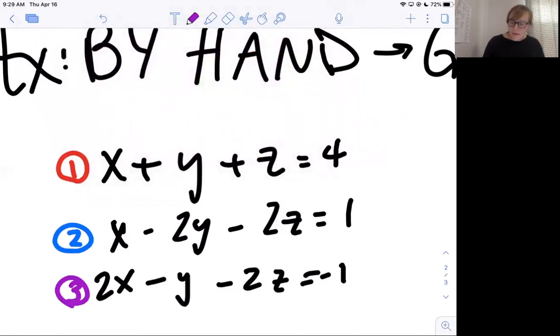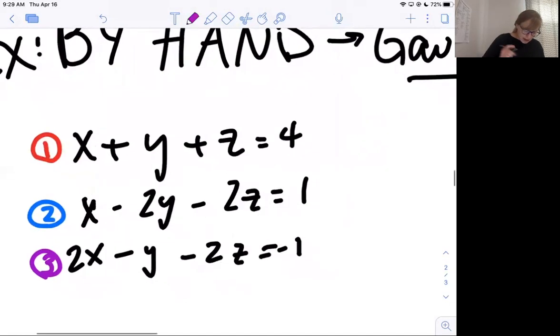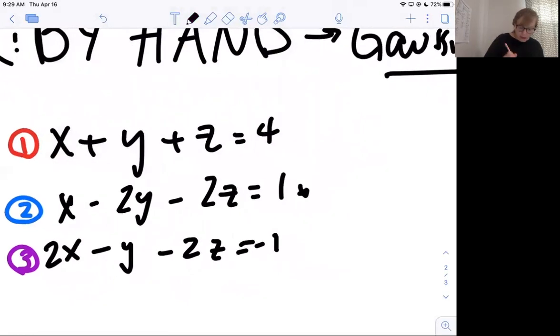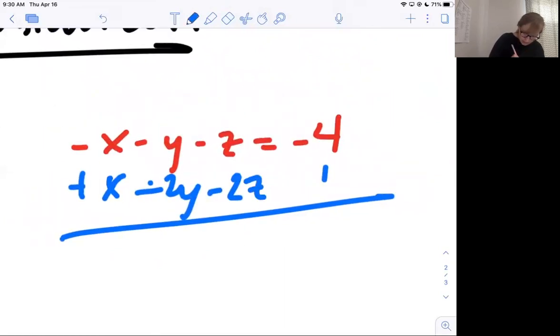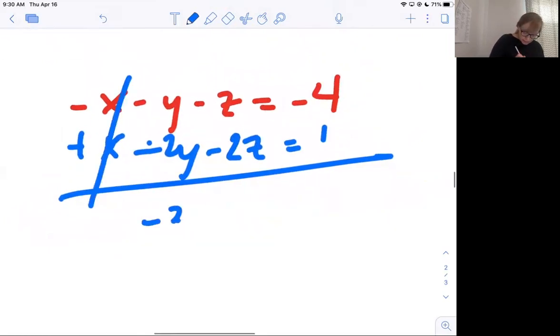We're going to do different combinations of these to find new answers. The first thing I'm going to do is change the second column by doing negative 1 times my first row and then adding that to 2. Whatever the last thing is, that's the row you end up changing. So I'm doing negative 1 times the first row: negative X minus Y minus Z equals negative 4. And we're going to add that to the second equation: X minus 2Y minus 2Z equals 1.